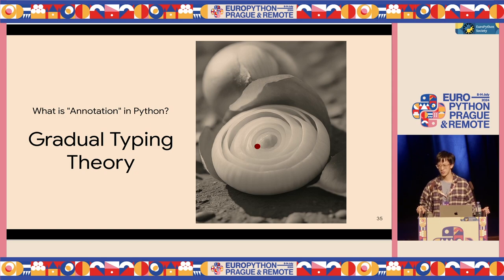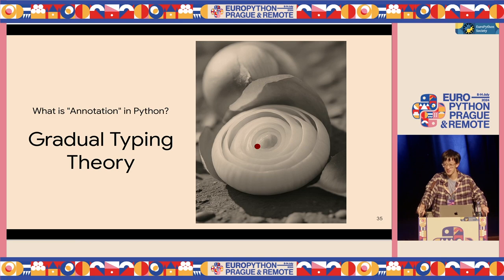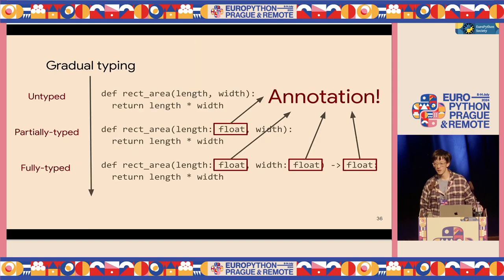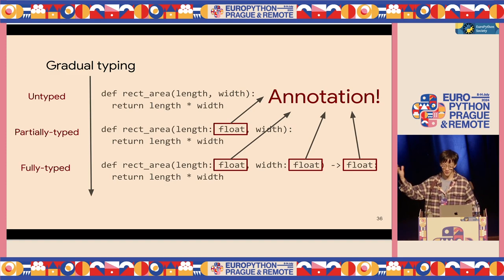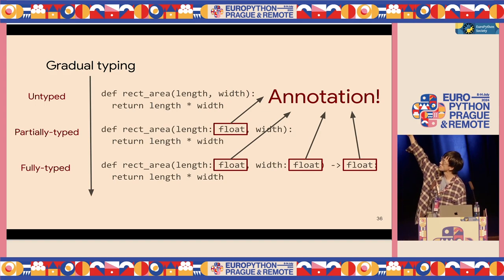Now we need to talk about annotation, because in the real Python world today when we talk about type, we actually talk about another thing called annotation. Annotation is based on something called gradual typing. Before gradual typing, Python code was untyped. After gradual typing, you can partially or fully type your code using annotations.